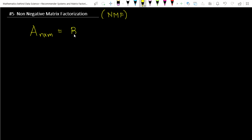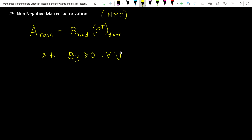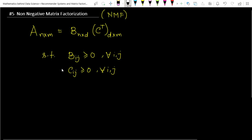If this matrix A can be written in the form B times C-transpose, where B has dimension n cross d and C-transpose has dimension d cross m, then we call this a Non-Negative Matrix Factorization. The conditions are: B_ij, each component of matrix B, must be greater than or equal to zero for all i, j; and C_ij, each component of matrix C-transpose, must also be greater than or equal to zero for all i, j. These non-negativity conditions are a kind of constraint.